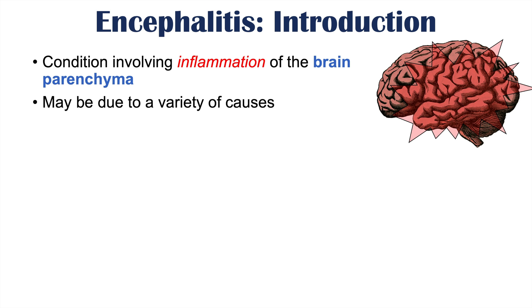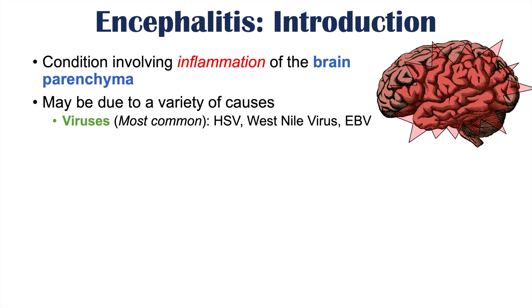Encephalitis may be due to a variety of causes. Some of these include viruses, which are actually the most common causes of encephalitis. Some of these viruses include herpes simplex virus or HSV, West Nile virus, and Epstein-Barr virus. There are many other viruses that can cause encephalitis, including rabies, St. Louis virus, and some equine viruses.